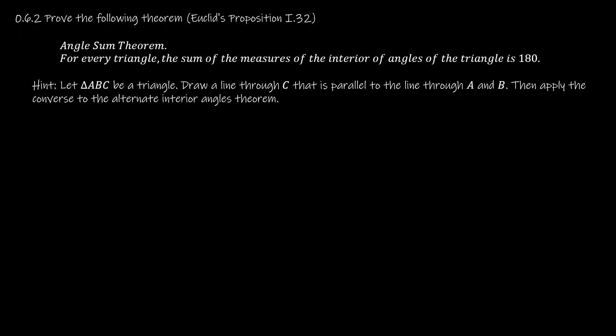The particular proof we're going to look at is question 0.6.2 in your textbook, which asks us to prove Euclid's Proposition I-32, which is the angle sum theorem. This states that for every triangle, the sum of the measures of the interior angles of the triangle is 180 degrees.